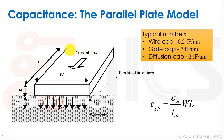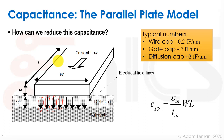That's traditionally how we looked at wires. Typical numbers: gate capacitance is about 2 fF/μm, diffusion cap is also about 2 fF/μm. The wire cap for a minimum-size wire is about 0.2 fF/μm, which seems smaller than gate and diffusion cap, but remember that wires can have much larger area than what gates and diffusions take.